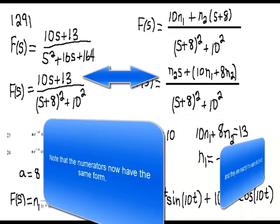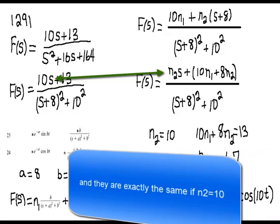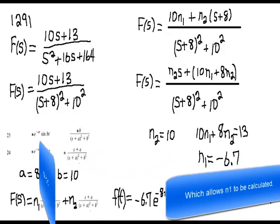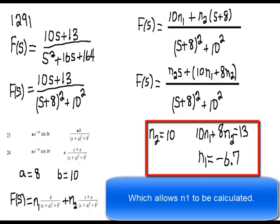They are exactly the same if N2 equals 10, and 10·N1 plus 8·N2 equals 13, which allows N1 to be calculated.